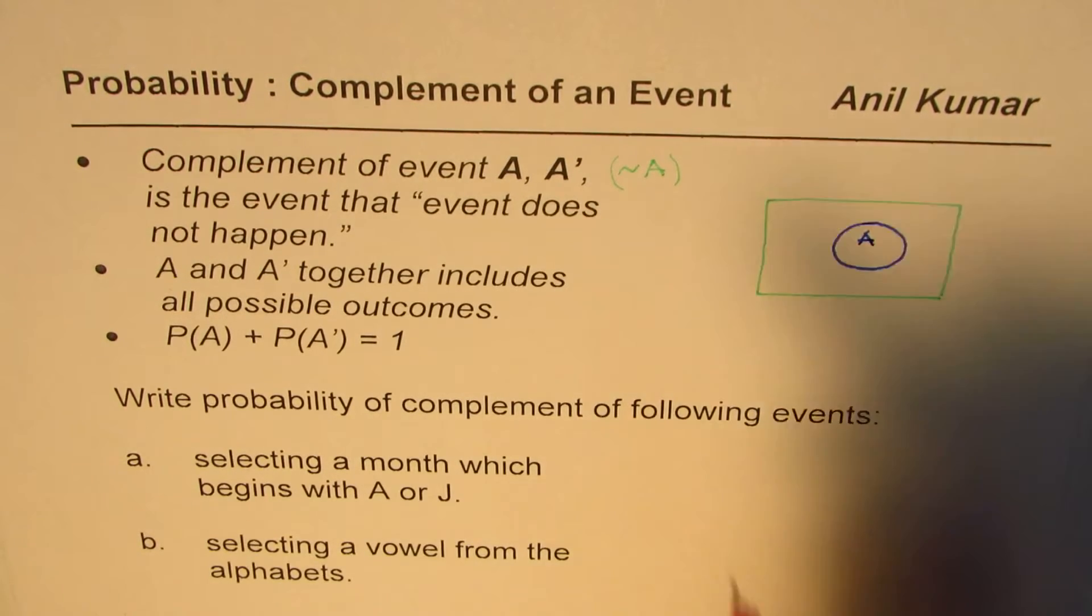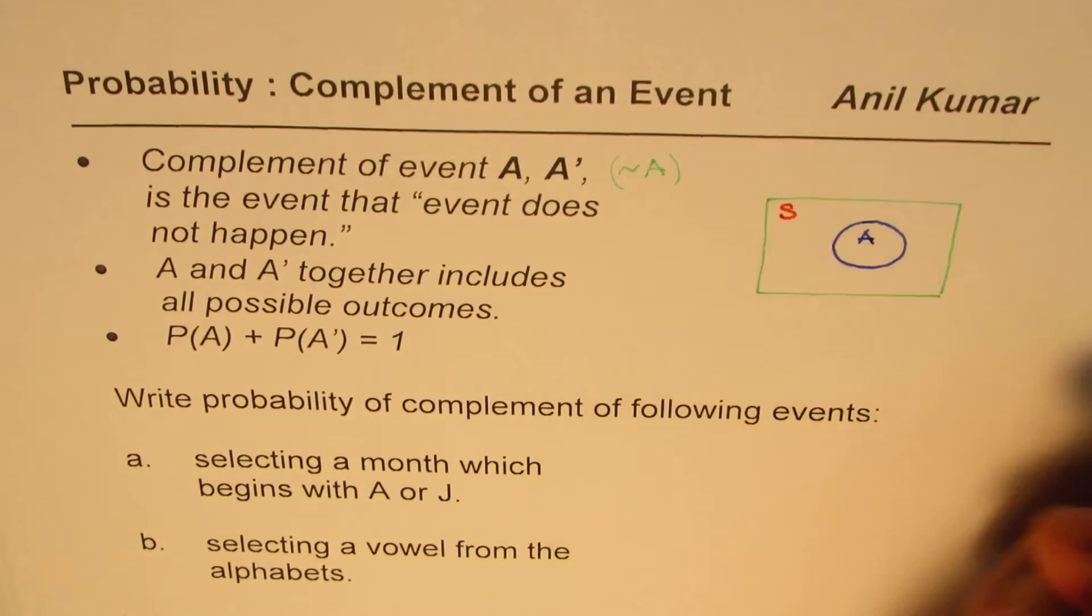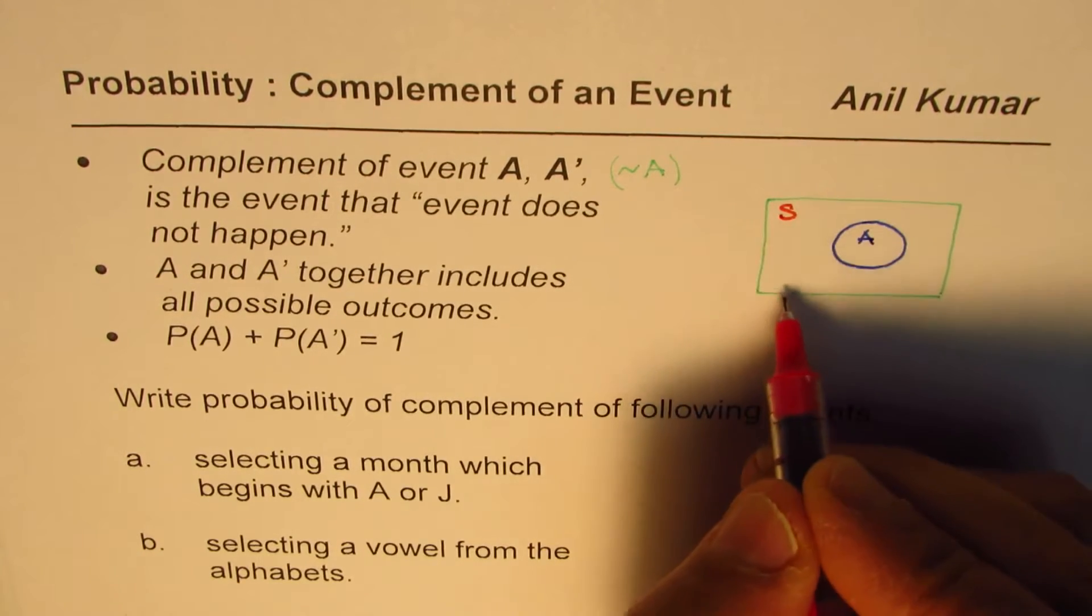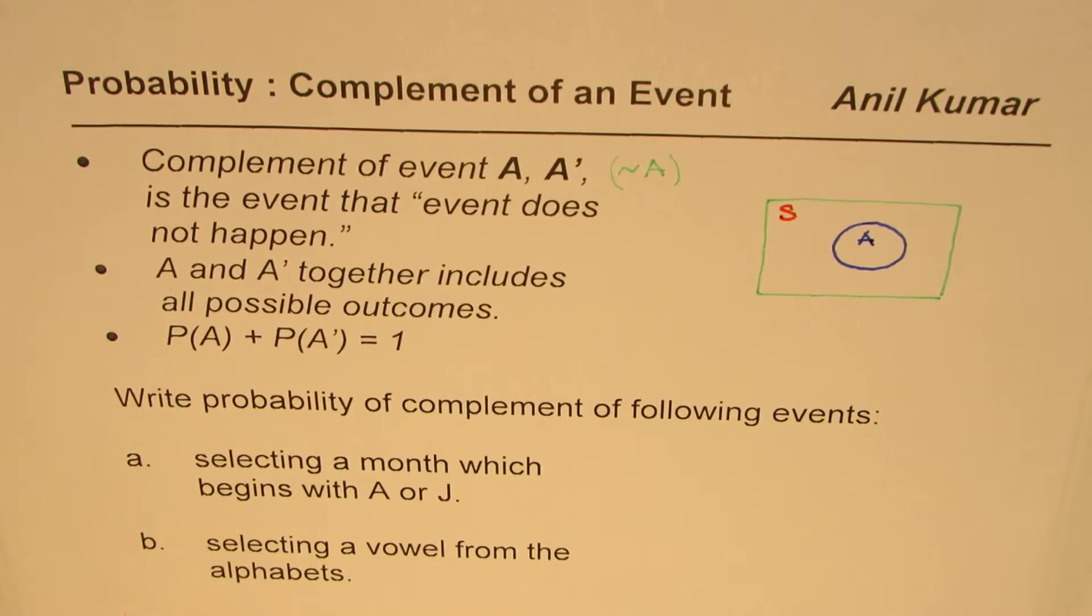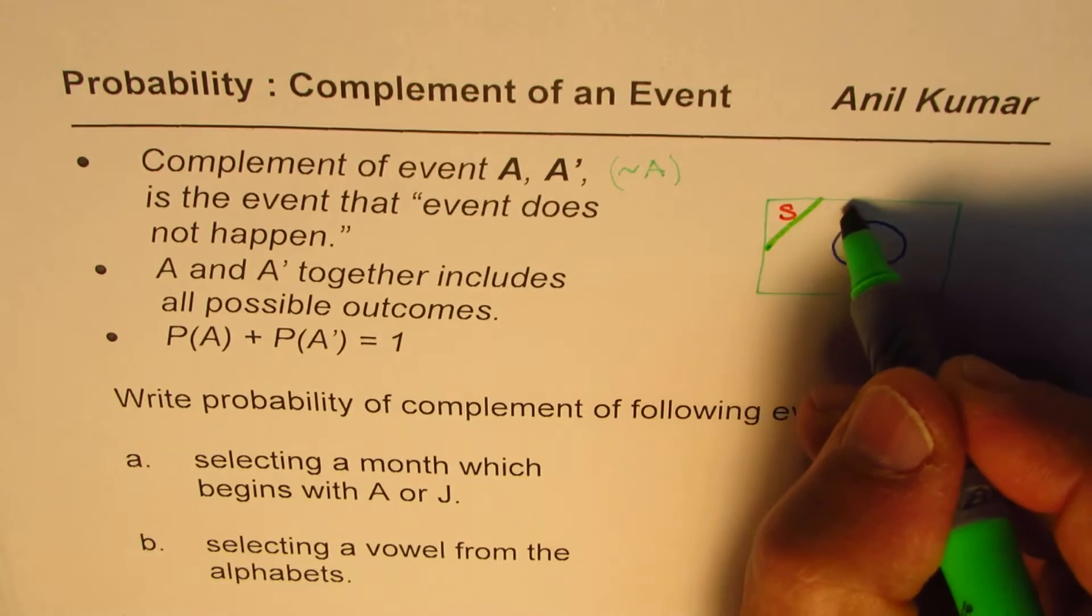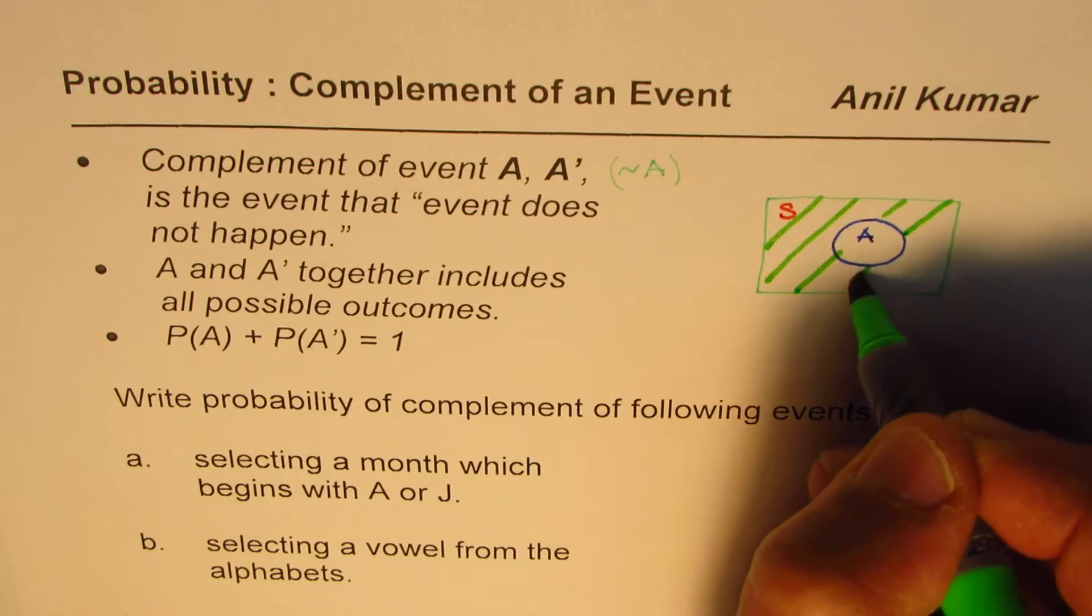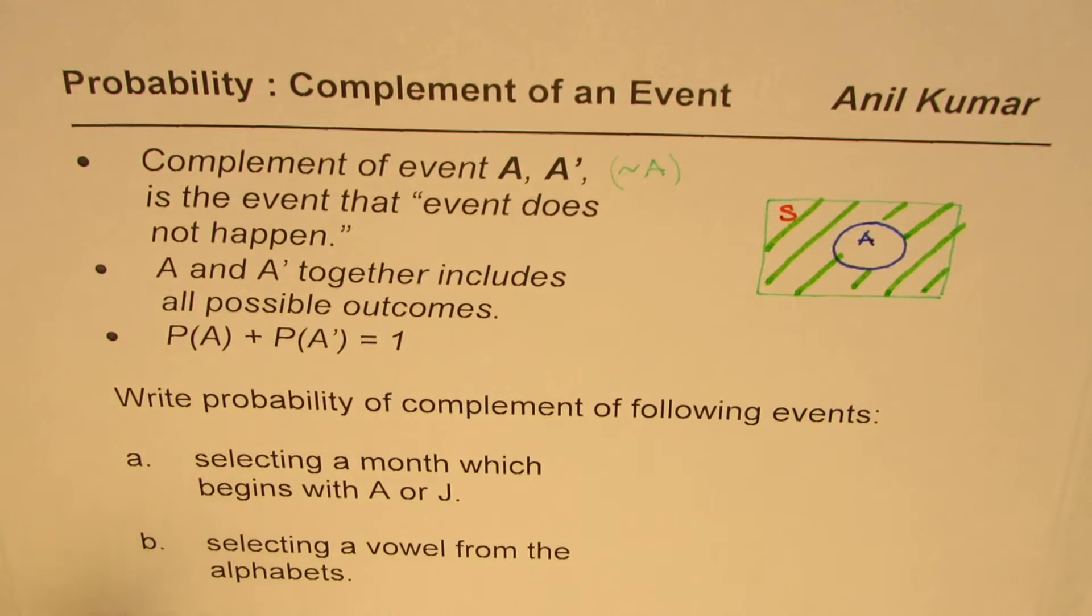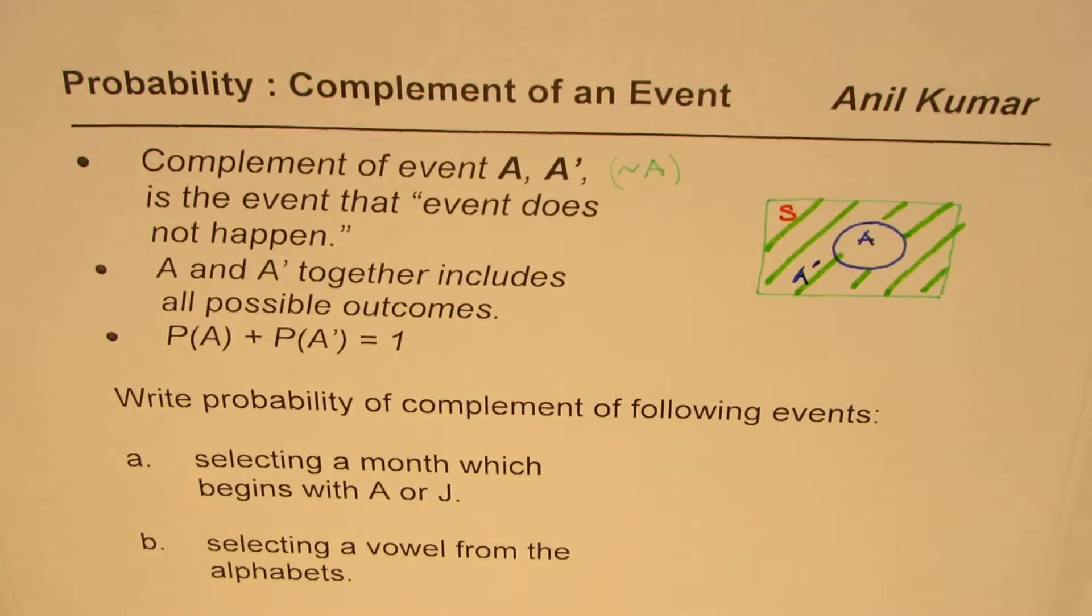So here what we have is our universal set or the sample space. You may write S or Ω. Then the outside portion, which is let me shade it a bit, which is all this not including A. So not including A is the complement of A. This is what we are calling as complement of A.